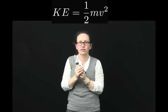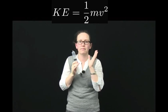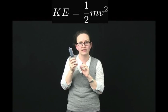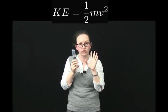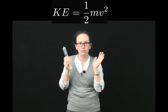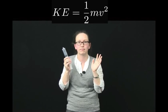Energy of movement has a special name — it's called kinetic energy. The kinetic energy, the energy possessed by a moving object, can be calculated using the formula one half times mv squared, where m is the mass of the object and v is the velocity of the object. Let's do an example where we calculate the amount of kinetic energy possessed by an object.